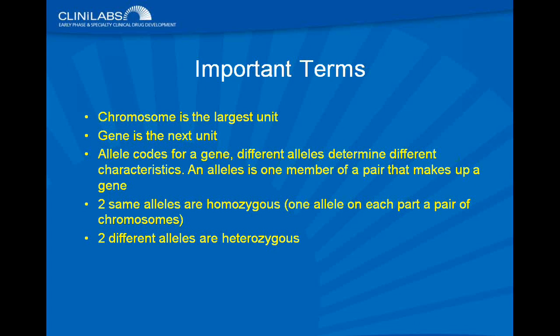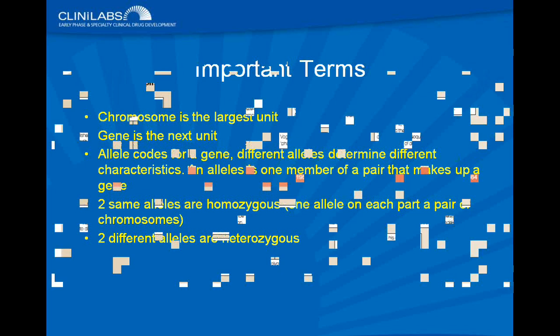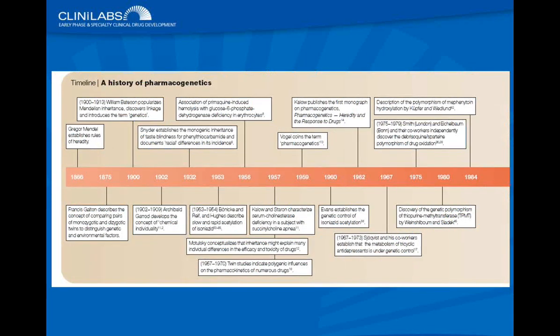A little history of pharmacogenetics: it actually goes back to Pythagoras, who first described the disease favism — seen in people of Mediterranean descent. When they eat fava beans they can get hemolytic anemia. While the concept of pharmacogenetics is centuries old, the term was only coined in the late 1950s — 1959 to be exact — and our knowledge continues to grow because of great new laboratory tools.